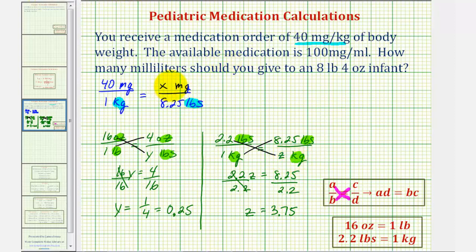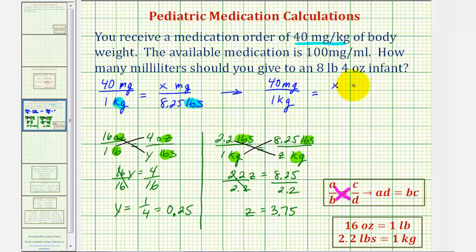So we finally can solve for X to determine the number of milligrams the infant needs. And then from there, we can determine the number of milliliters the infant needs. So we can say 40 milligrams is to one kilogram as X milligrams is to 3.75 kilograms.